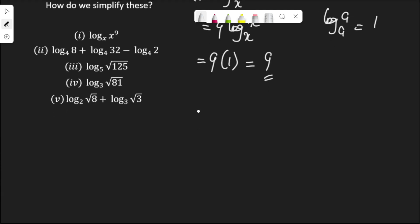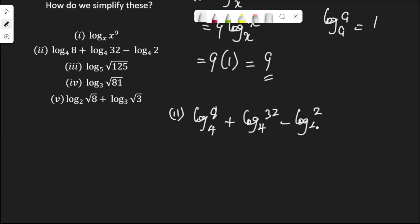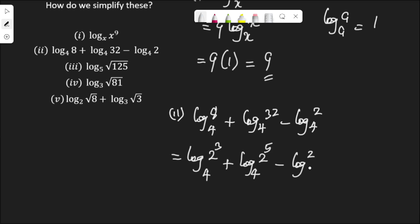Question 2: log 8 to base 4, plus log 32 to base 4, minus log 2 to base 4. I want to express these in terms of powers of 2. So 8 can be expressed as 2 to the power of 3, and log 32 can be expressed as 2 to the power of 5, all to base 4, minus log 2 to base 4.